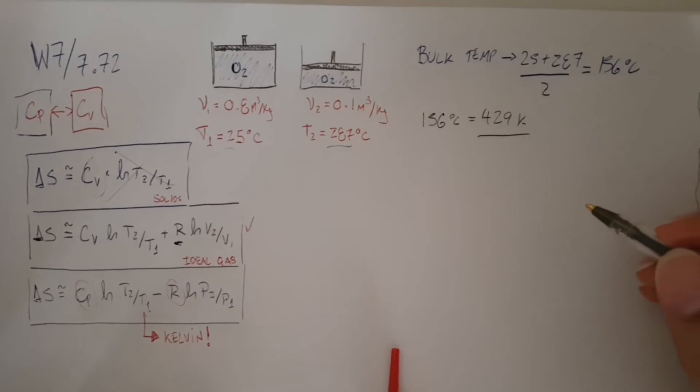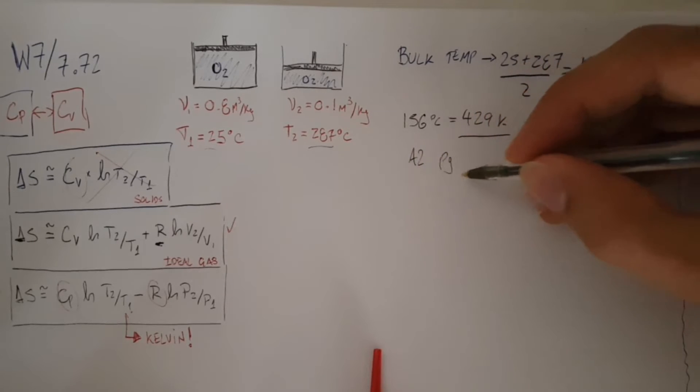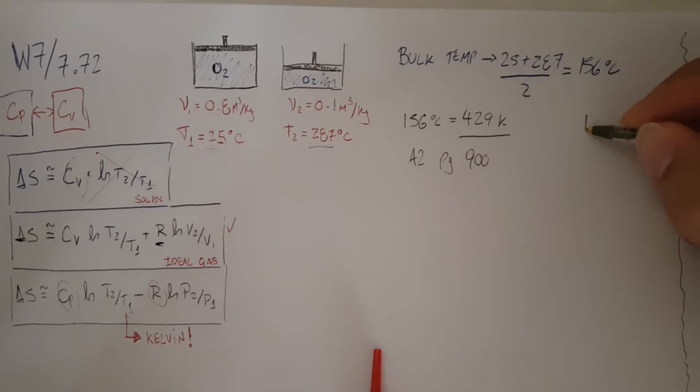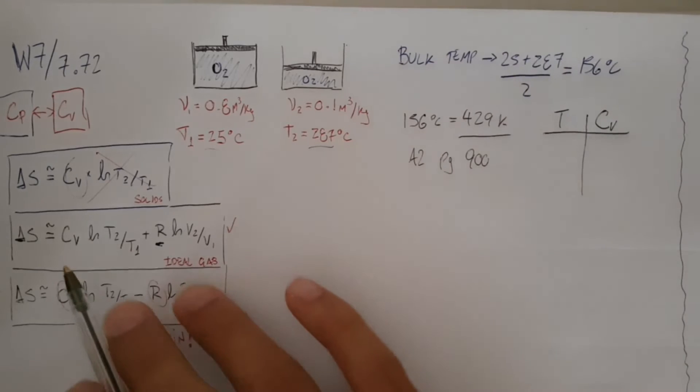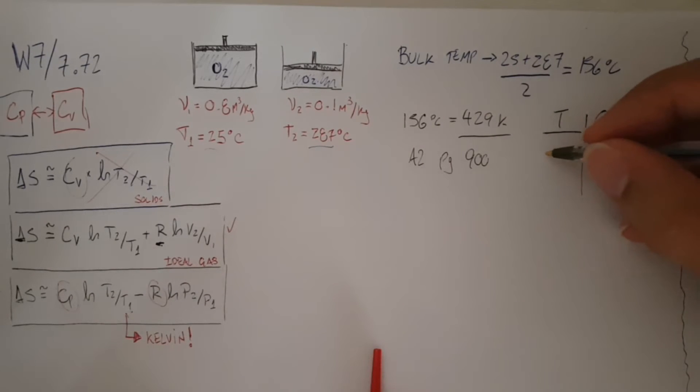We're going to go to our table A2 as per usual, all the way to page 900, and we're going to do a little interpolation because obviously there's no value for 429. Temperature is over here, and my CV is over here. I'm looking for CV because I'm using the second equation.